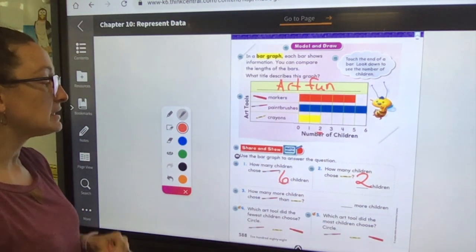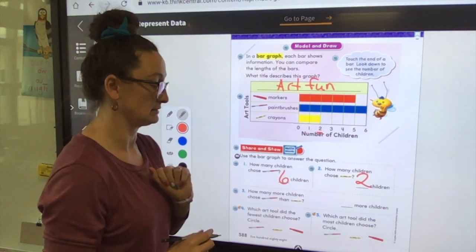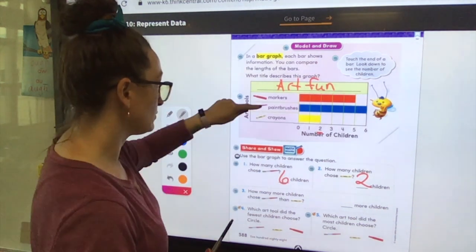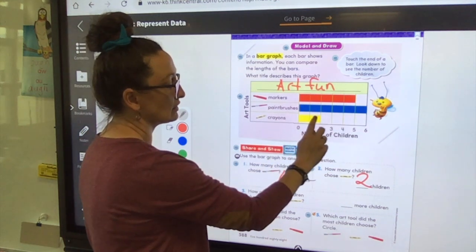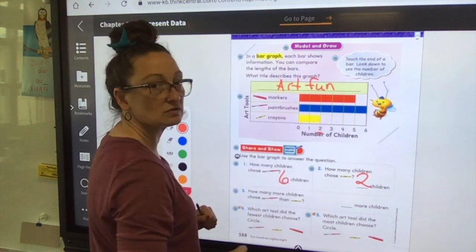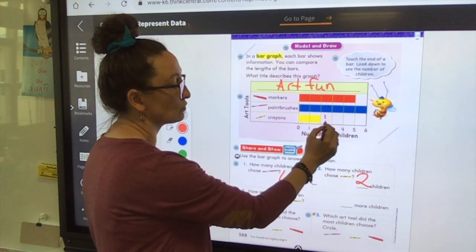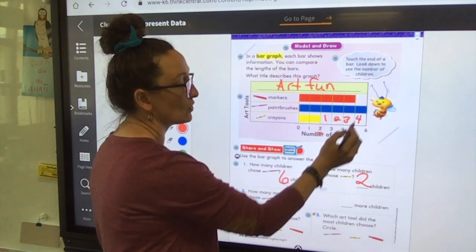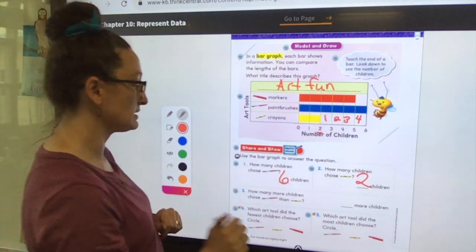Look at number three. How many more children chose paintbrushes than crayons? Okay, so we're gonna have to compare our bars. So let's find our paintbrush and crayons right below it. So we have blue and yellow, but I see a bunch of children who didn't choose crayons and they did choose paintbrushes. How many do you see? Let's compare. There's blue with no yellow, so there's one, two, three, four. Four. Four more kids chose paintbrushes than crayons, so you write four over there.